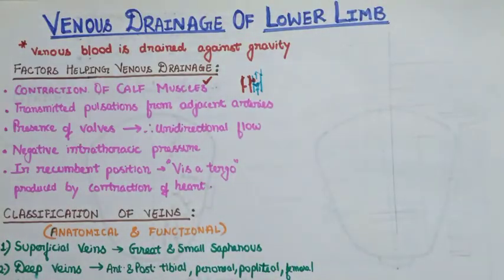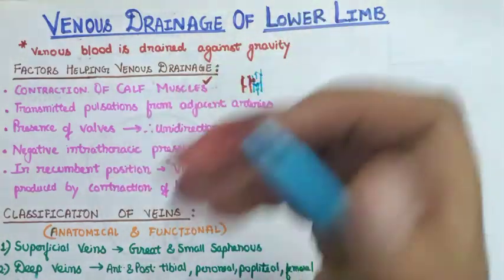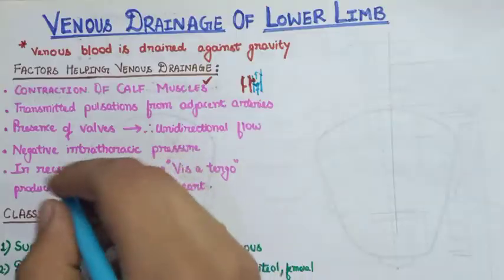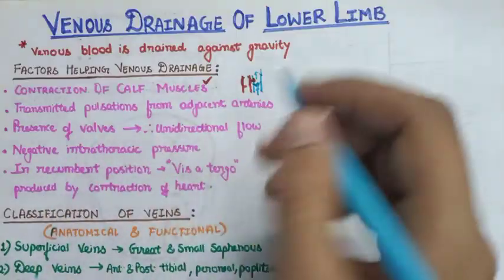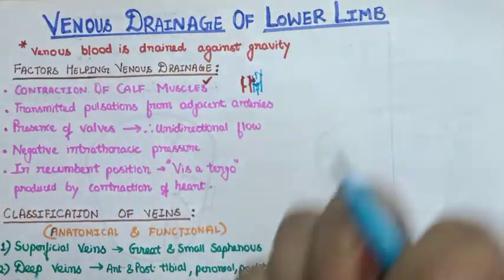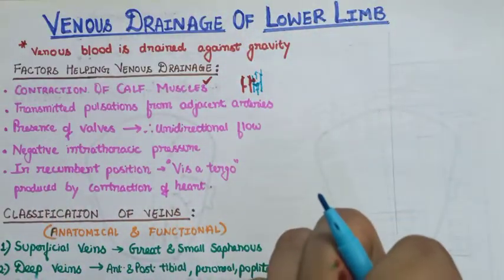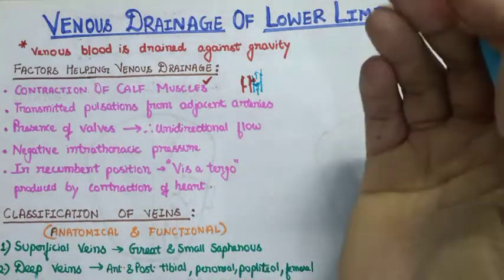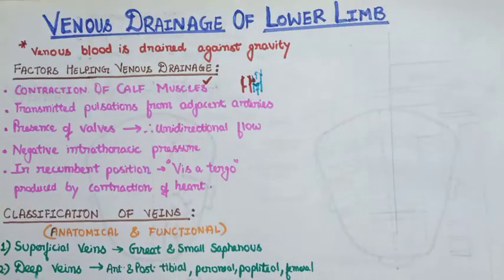The fourth factor is negative intrathoracic pressure. Negative intrathoracic pressure acts as a vacuum and helps in pulling the blood easily from the distant lower region towards the heart.